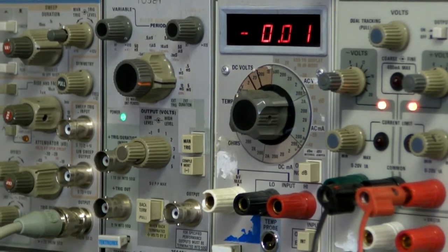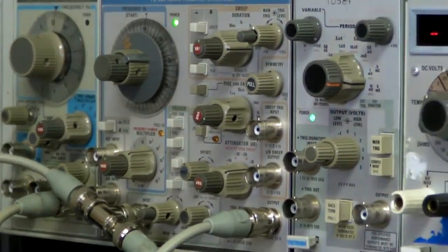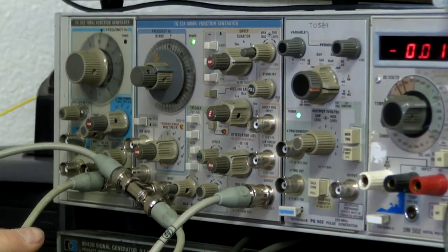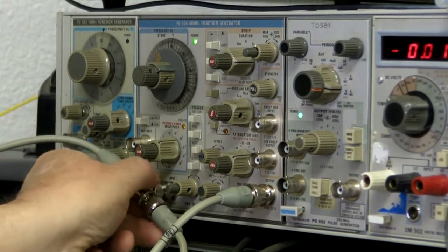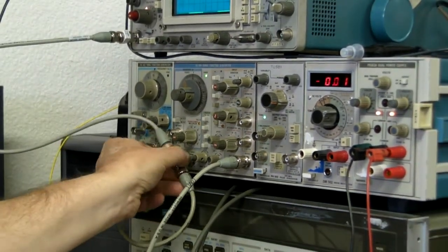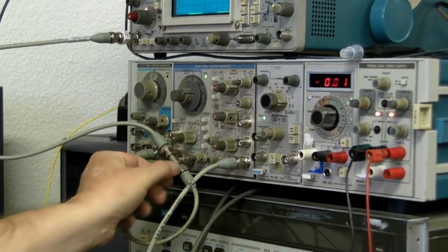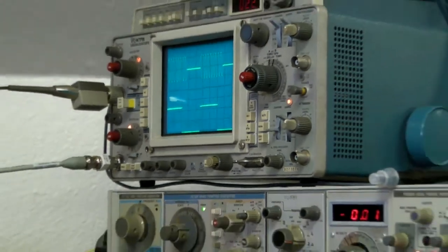So an FG502 and an FG504. The FG502 is making a one kilohertz square wave that goes into the trigger input, the trigger and phase lock input of the FG504. And then we have the FG504 set in gate mode. So this one gates that one on and off.